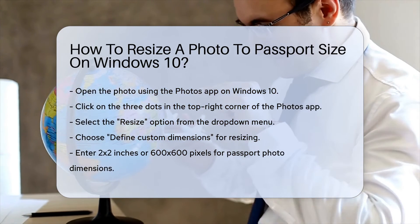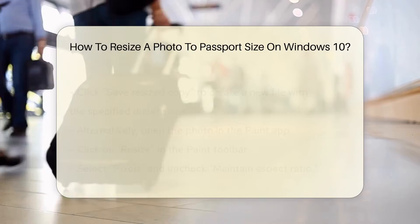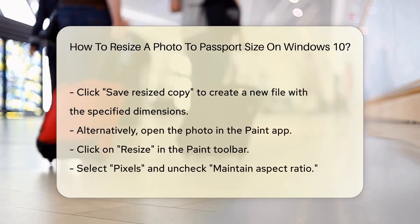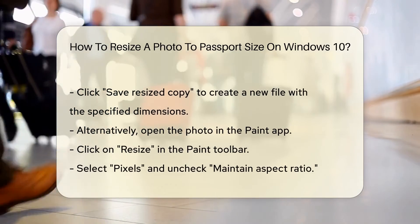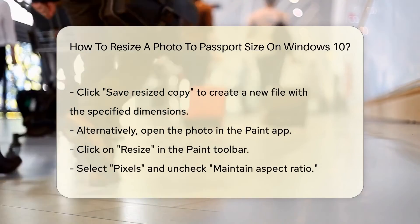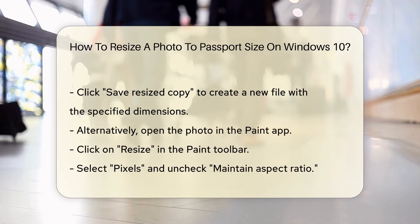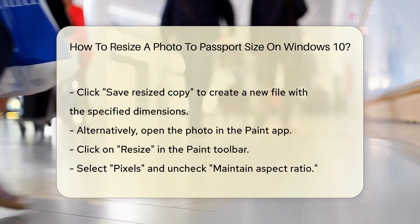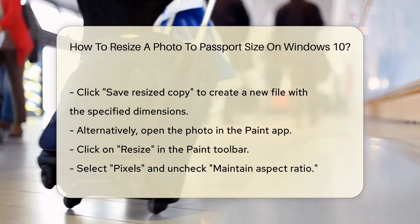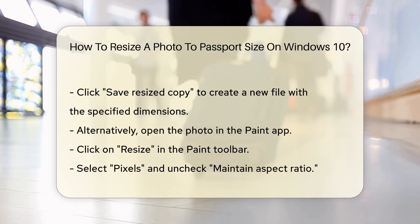Define custom dimensions to set your desired size. Passport photos typically measure 2x2 inches. Enter the dimensions in pixels, keeping the aspect ratio in mind.